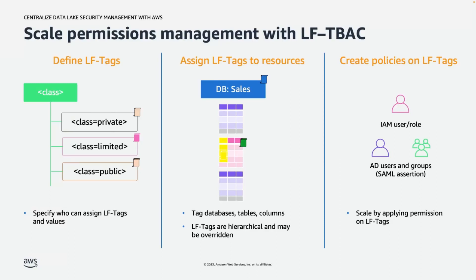These tags are hierarchical. So if you tag a database with a specific value, all tables within that database inherit that tag. Similarly, when you tag a particular table, the columns within it inherit that tag. It is also possible to override these inherited tags — for example, you can override the tag value for a specific column. Once you assign these Lake Formation tags, the next step is simply defining the policies on the tags to scale the permission model, because you are no longer trying to do access control at each individual resource and user combination.